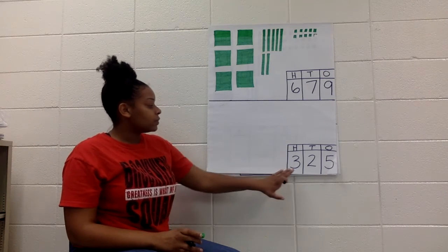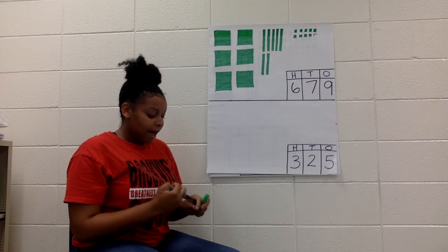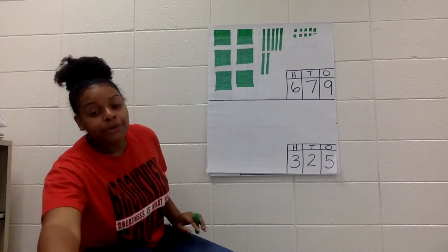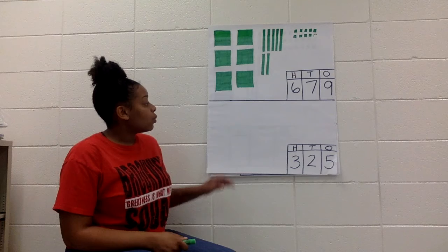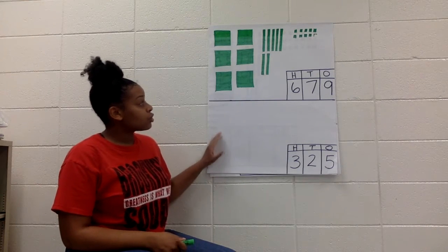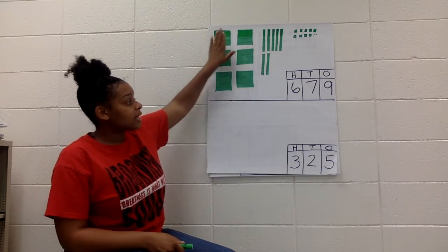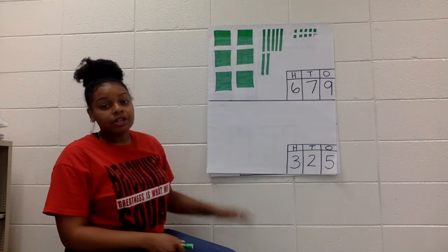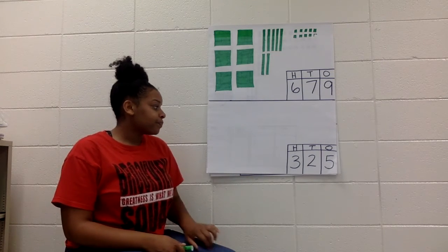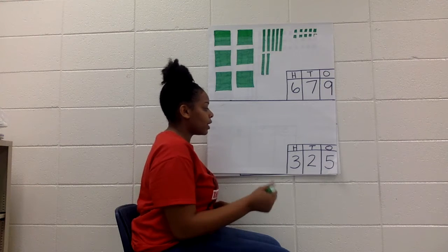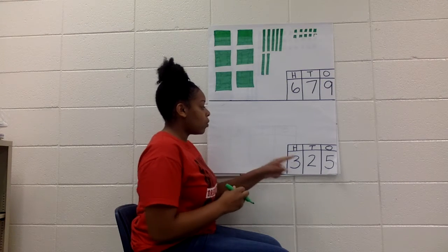Now let's move down here. This time I need to build the number 325 in base 10 form. So here we had to turn the base 10 into a number. Now we're turning a number into base 10. So I'm going to start with my ones.